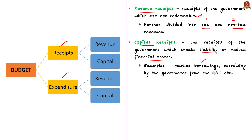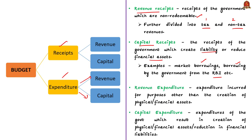Expenditure is also classified into revenue and capital expenditure. Revenue expenditure is expenditure incurred for purposes other than the creation of physical or financial assets. Capital expenditure includes expenditures of the government which result in creation of physical or financial assets or reduction in financial liabilities.